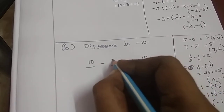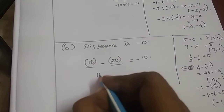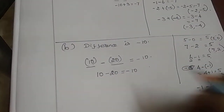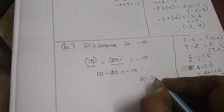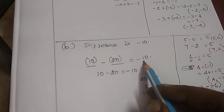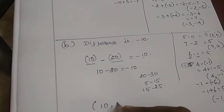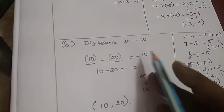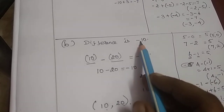For difference of minus 10: 10 minus 20 gives minus 10. The bigger number must have a negative sign. So 20 minus 10 is plus 10, but 10 minus 20 is minus 10. Other possibilities: 5 minus 15 and 15 minus 25 also give minus 10.